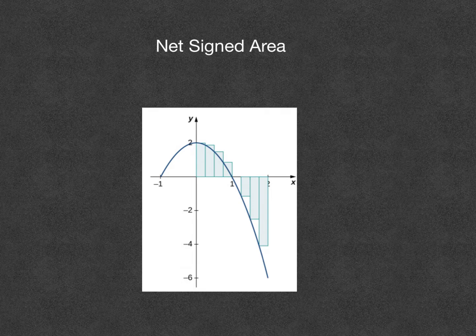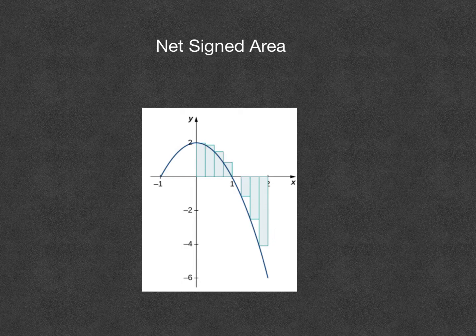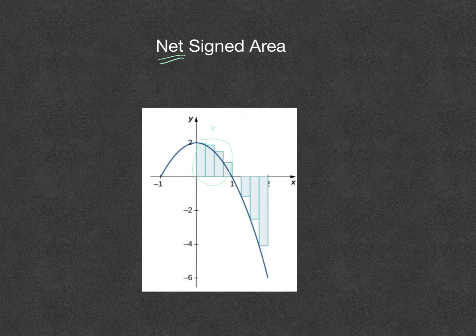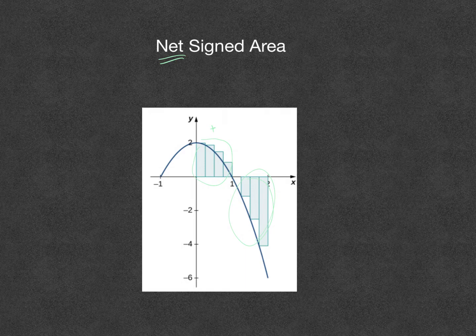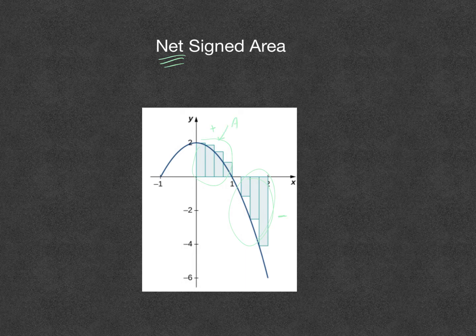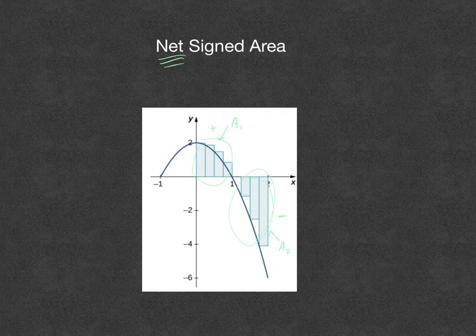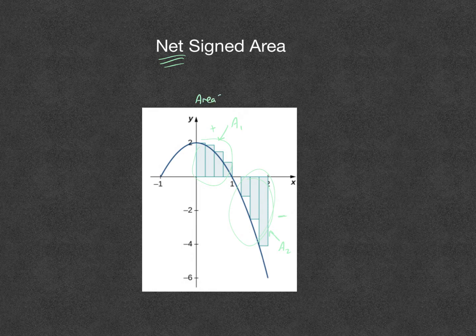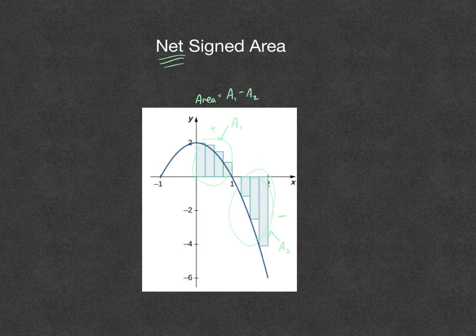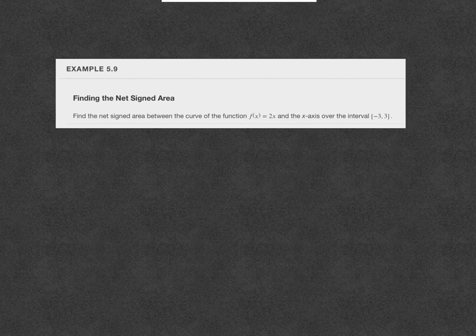Before we get to another example, I want to talk about the net signed area. Sometimes we have parts of our function that are above and below the x-axis. When we say the net signed area, we think of the area above the x-axis as positive, and when that area is below the x-axis, when we compute the net signed area, we subtract it. So we subtract the area of those rectangles below from the area above. If I were to label this as a sub 1 and that down there as a sub 2, then the net signed area of that region would be a1 minus a2. You let the stuff below the x-axis cancel out the stuff above the x-axis.